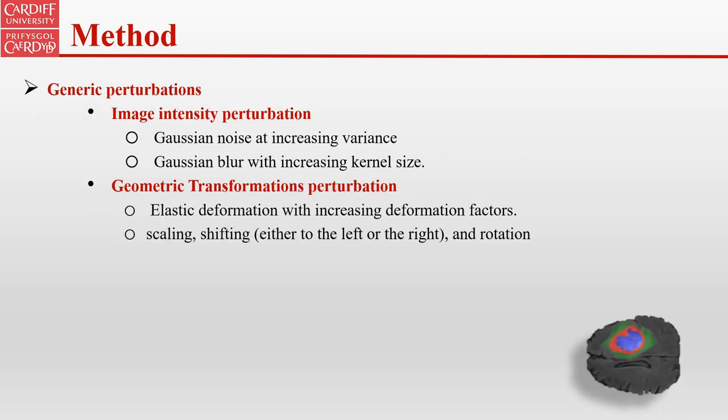Examples of generic perturbations are inspired by augmentation methods. We applied Gaussian noise and Gaussian blur as forms of image-intensity perturbation. For geometric transformation perturbation, we apply elastic deformation, scaling, shifting, and rotation.